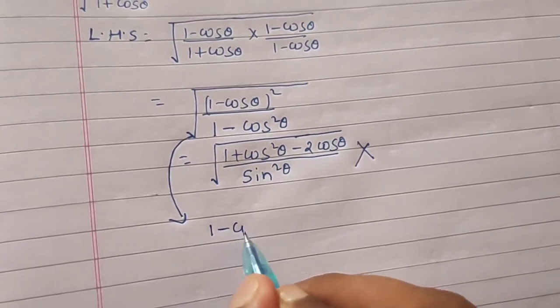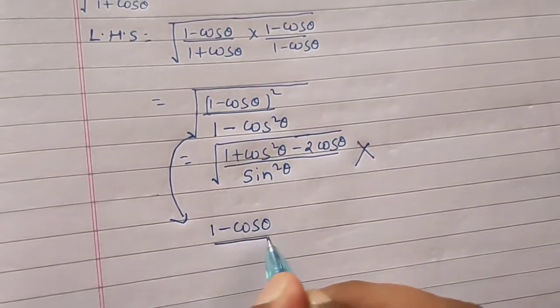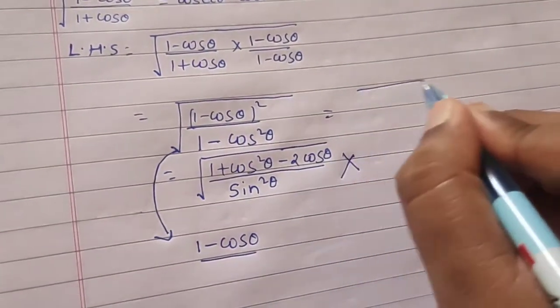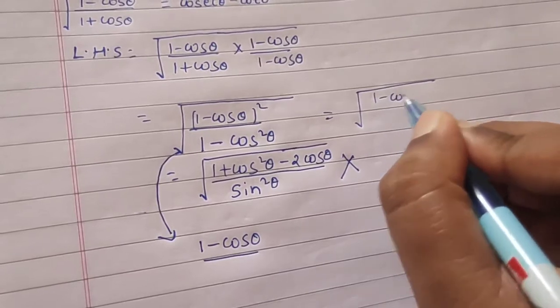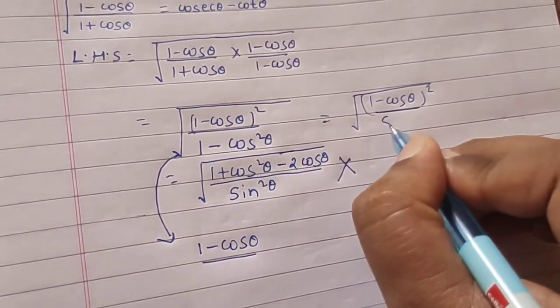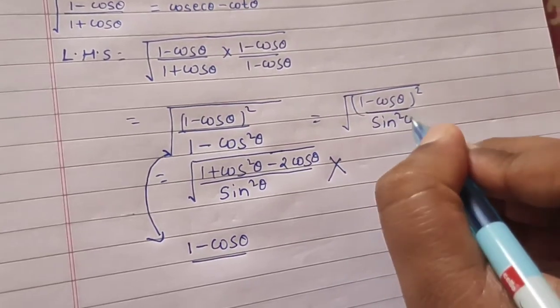This is 1 minus cos theta divided by... you can write this as 1 minus cos theta the whole square divided by 1 minus cos square theta, which is sin square theta.